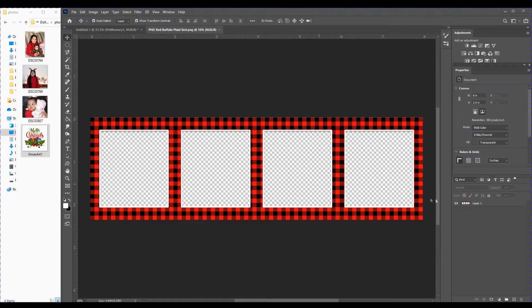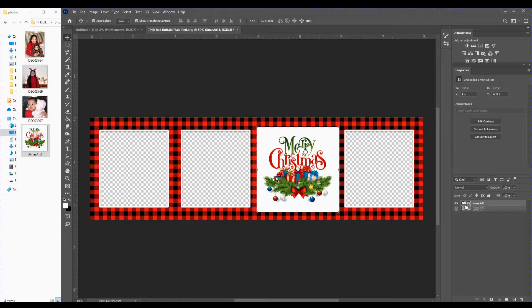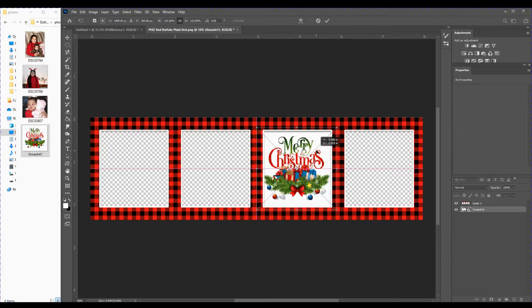So I'm going to drag and drop a piece of clip art onto the template and you can see at the moment it's on top of the template. So I'm going to click that layer and drag it below the template and then I can make my adjustments to size it perfectly in that space.